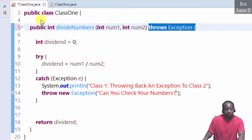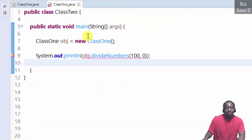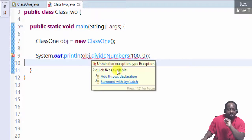Saving Class One causes an error in Class Two. Class Two has an error because it's calling the divideNumbers method. The divideNumbers method indicates it may throw an exception, therefore Class Two has to handle the exception that Class One throws back. Hover the error and select surround with try-catch.